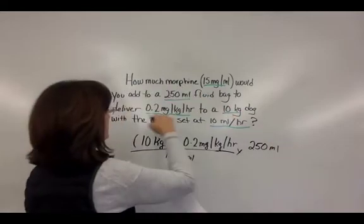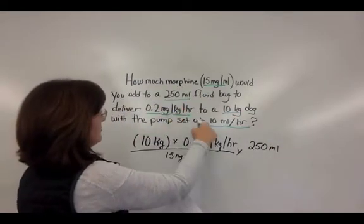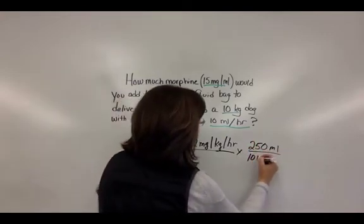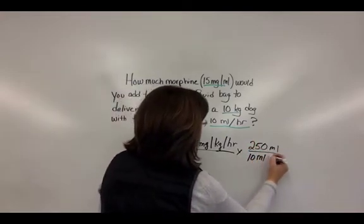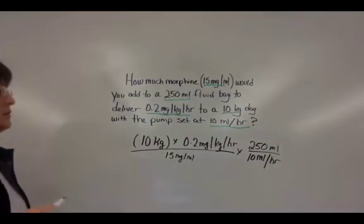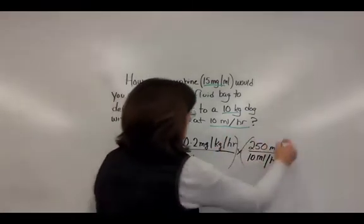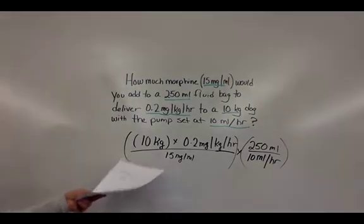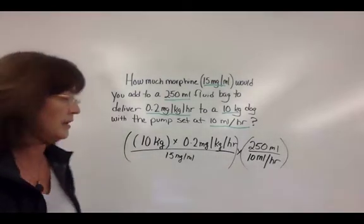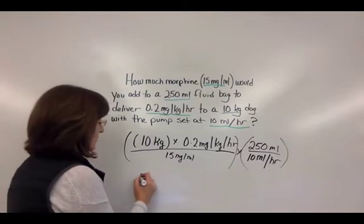The total fluid volume is 250 mLs, divided by the fluid rate of 10 mLs per hour. You can do those two parts separately and then multiply them together, or any way you prefer.